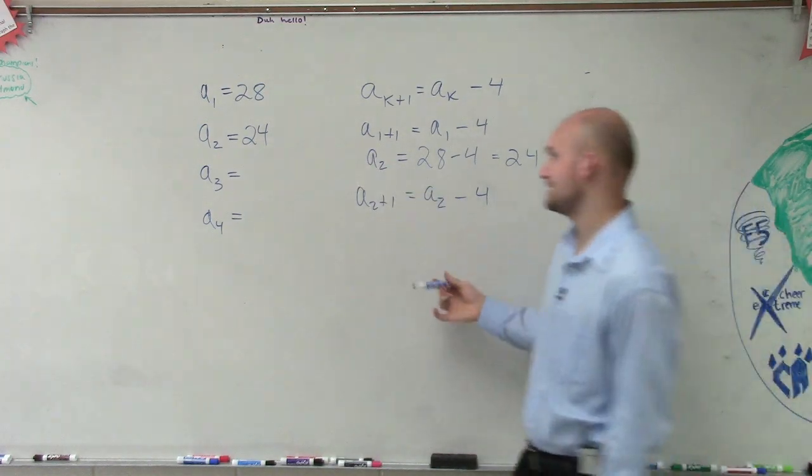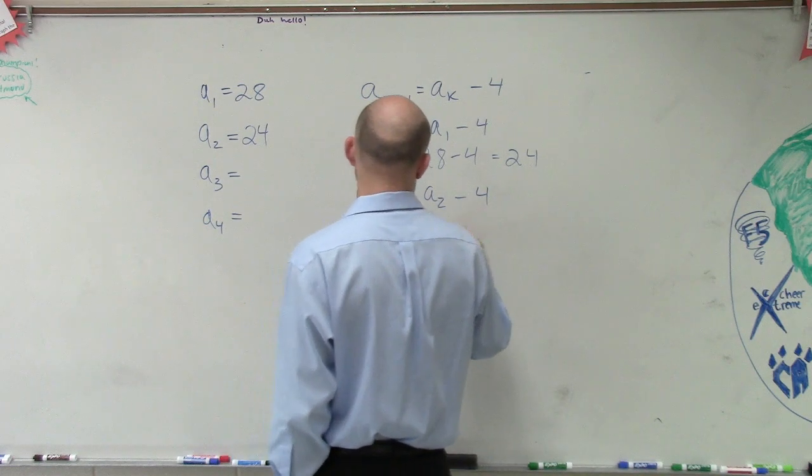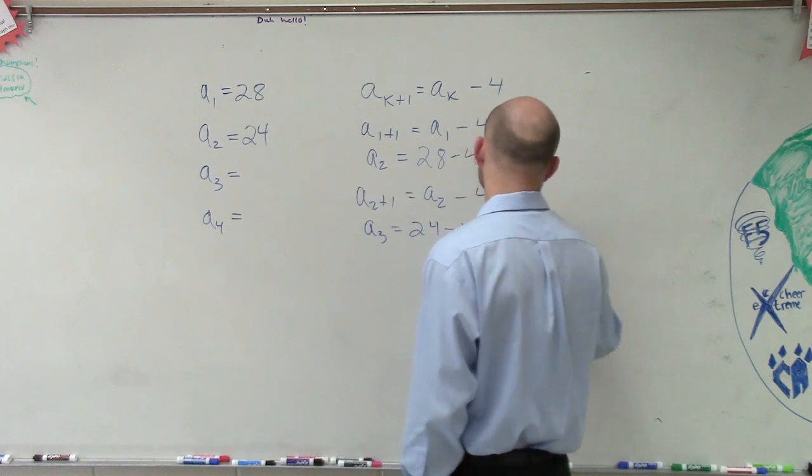And A sub 2 plus 1 is A sub 3. So therefore, now we know that A sub 3 equals 24 minus 4, which equals 20.